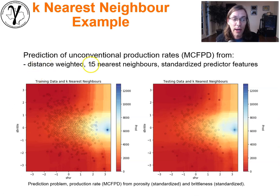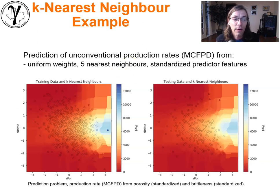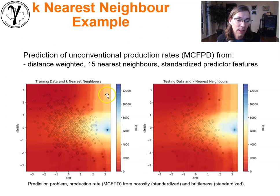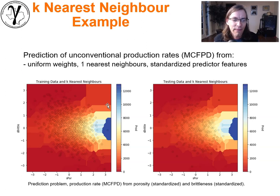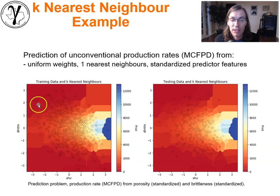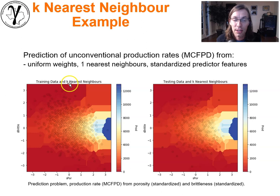Here's an example where we use distance-weighted with 15 nearest neighbors. You can see that with the distance-weighted approach, we smooth off the edges, and using more data gives an overall smoother model. We could take it to the extreme: uniform weights with one nearest neighbor. Look at what we get — this is a nearest neighbor estimator. These would be like Voronoi polygons, which describe the boundaries as intersections of perpendicular bisectors between the data, describing polygons of influence around each data point, assigned the same value as the closest data within the polygon.